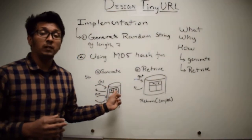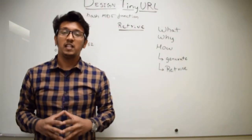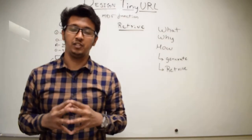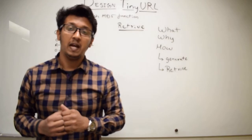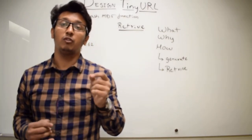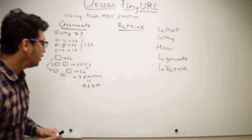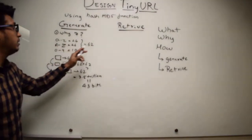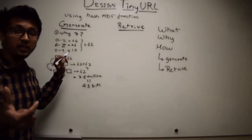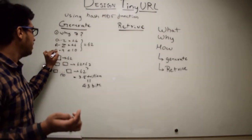Because of collision issues during insertion, let's move to the second method using MD5 hash generation. Before beginning, let me explain why we choose a seven-character length for generating short URLs. Consider that an alphanumeric string consists of lowercase a to z, uppercase A to Z, and digits 0 to 9.